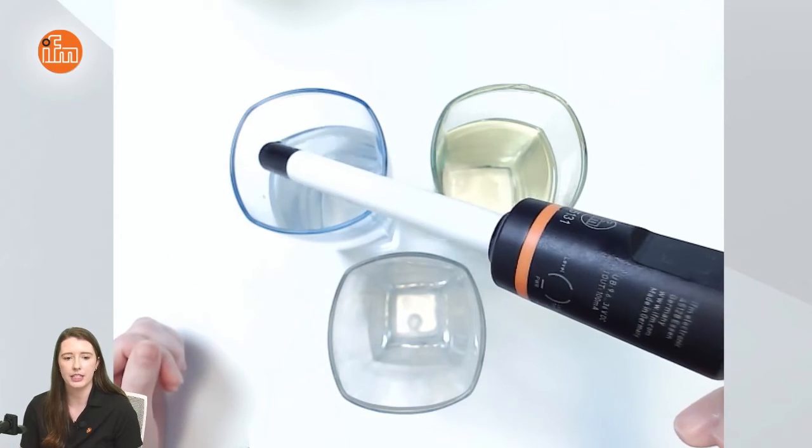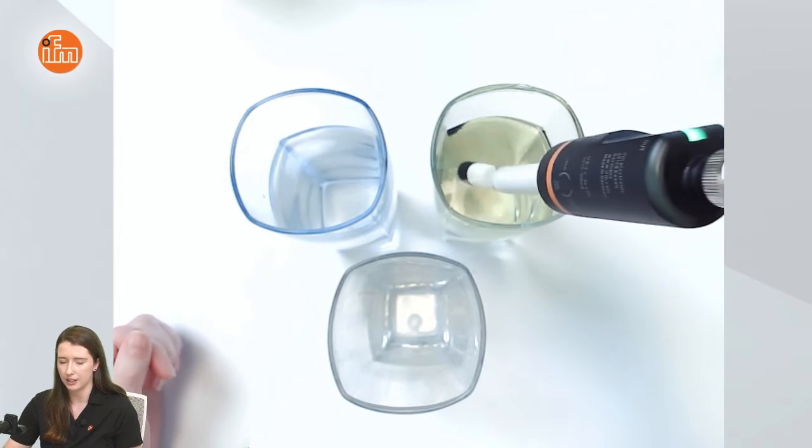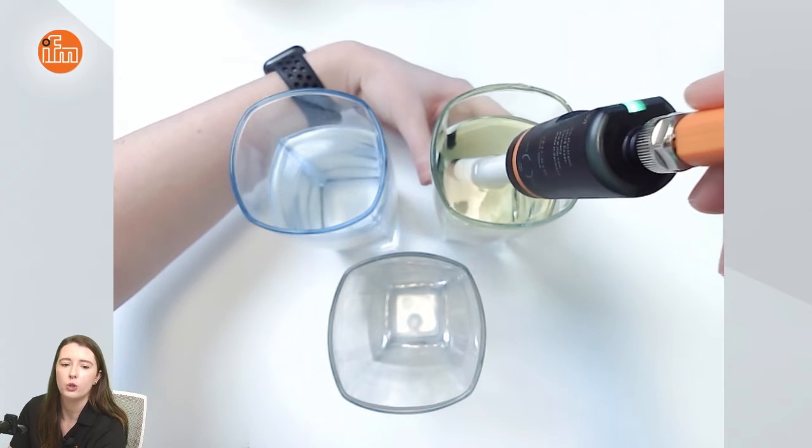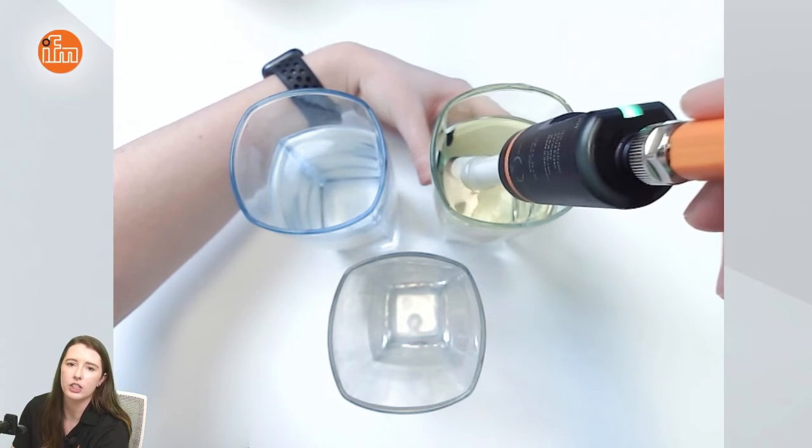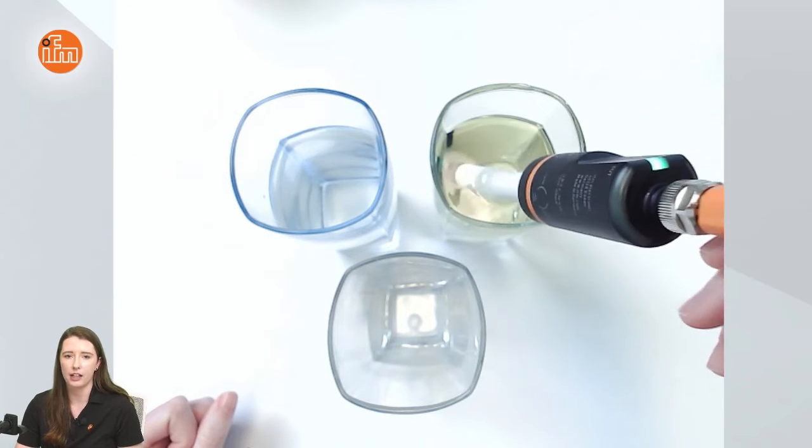Next if I put it into the vegetable oil glass even if I ground it you can see that the status LED still does not change because the sensor is not calibrated for oil.